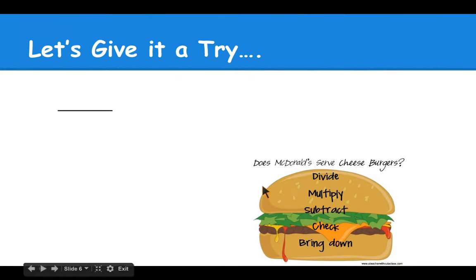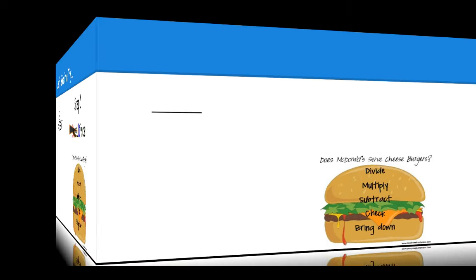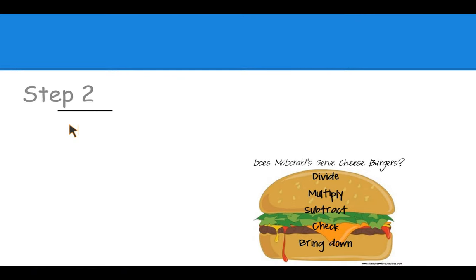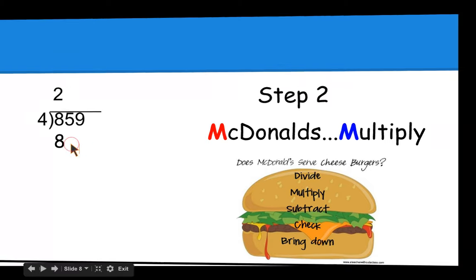Let's give it a try. Step one, D does for divide. So we're going to divide four into the first place value, which is the hundredths. Four goes into eight two times. Step two, M McDonald's for multiply. Now we're going to multiply two times four, which equals eight.